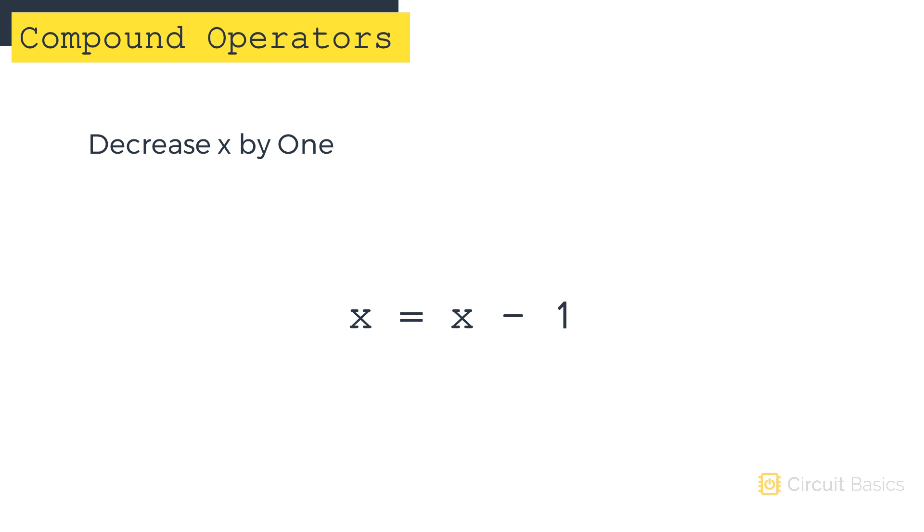You can also subtract 1 from a variable using the decrement operator. It's equivalent to writing x equals x minus 1. The decrement operator is an x with two minus signs after it. Just like x plus plus, x minus minus decrements x by 1 after the math is performed, so the original value of x is used in the formula.